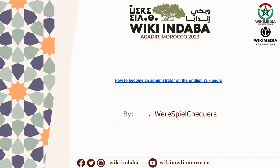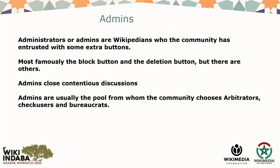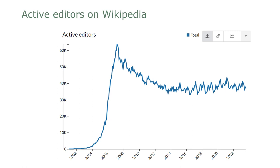So first of all, what is an administrator and why would any of you want to become one? Administrators, or admins, are Wikipedians who the community has entrusted with some extra buttons — most famously the block button and the deletion button. We can block users, delete pages, and undelete. Admins also close contentious discussions and are usually the pool from whom the community chooses arbitrators, checkusers, oversighters, and bureaucrats.